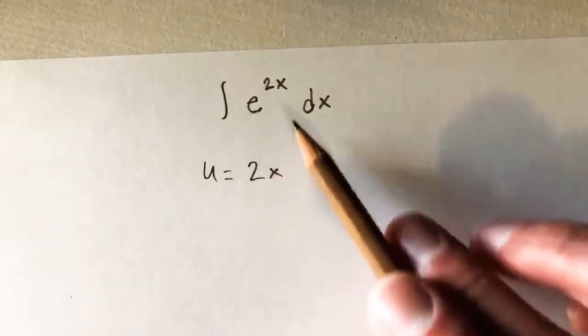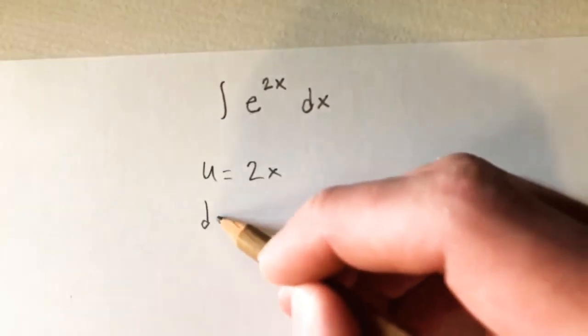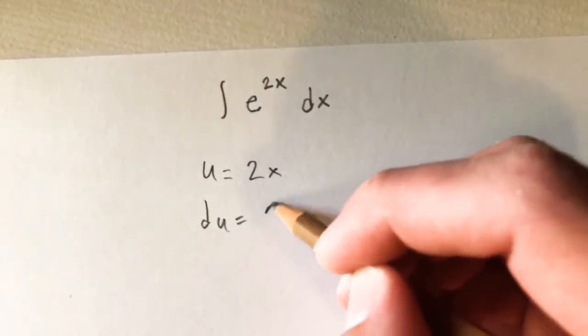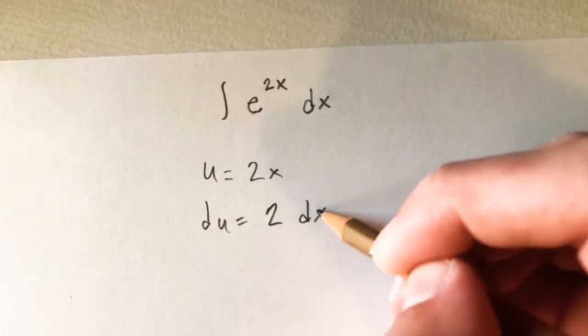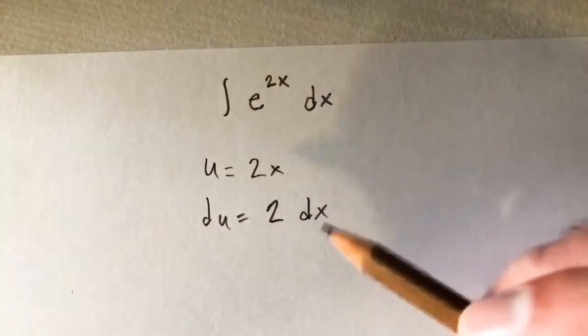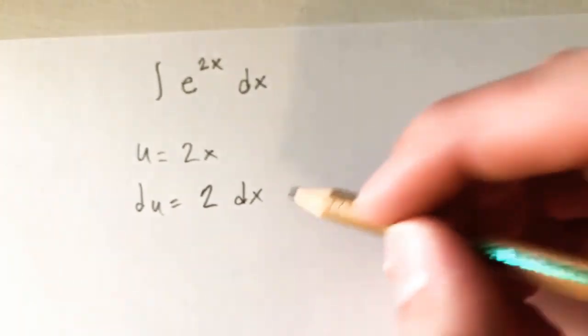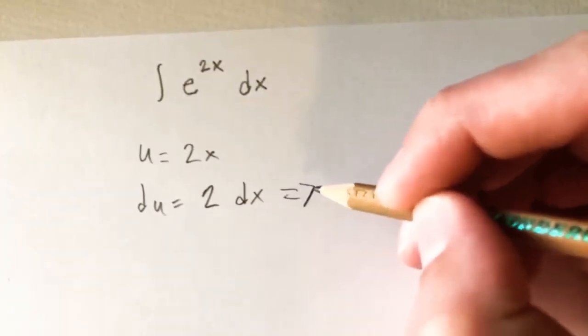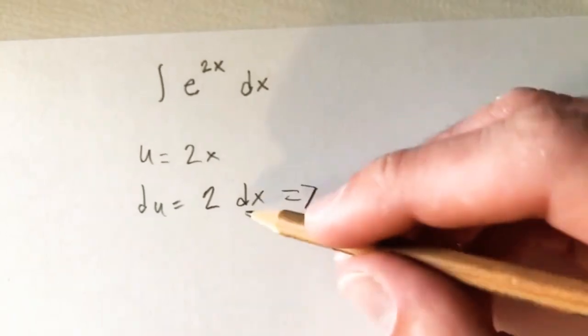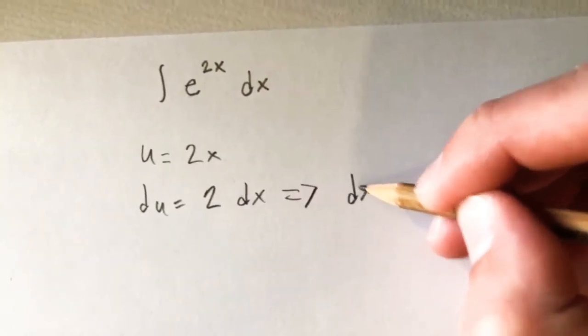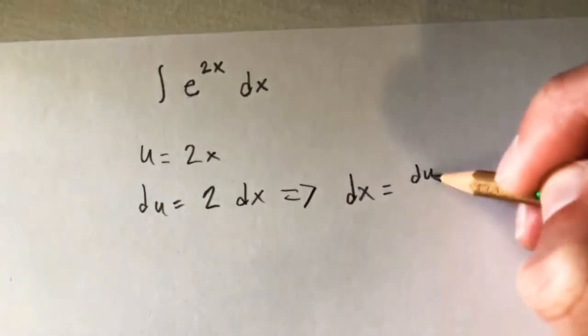So if we say our u is 2x, then du is just going to be the derivative of 2x, which like I just said, is just 2 and then dx. So if we're now going to make our substitutions, what we want to do first is take this equation here and solve it for dx. So we would figure out that dx equals du over 2.